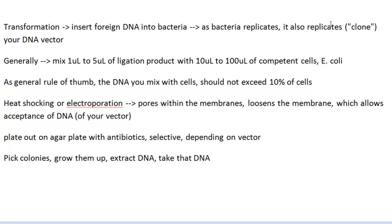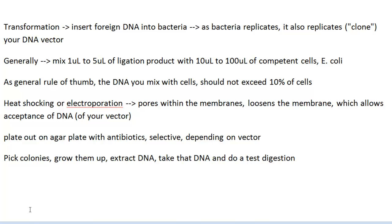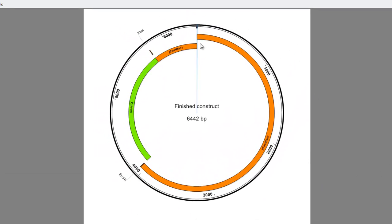And then based on that, you take that DNA and do a test digestion, which means you take a small amount of DNA, and in our case we digest using EcoRI and XbaI to see if we get a profile of an insert that's 1.7 KB and a vector that's around 4.7 KB. And if we get something like that, then we know that the original product has to look something like this.